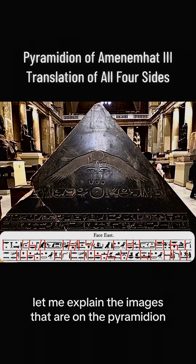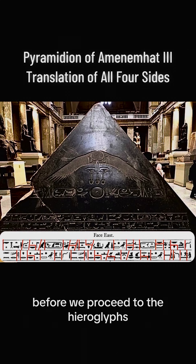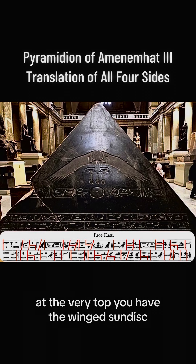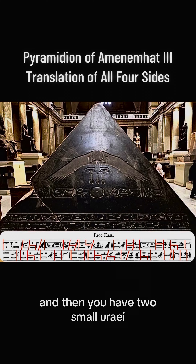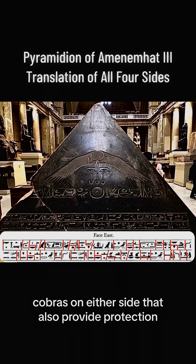Let me explain the images that are on the Pyramidion before we proceed to the hieroglyphs. At the very top, you have the Winged Sun Disc — the sun in the center with wings outstretched in protection, and then two small Urii Cobras on either side that also provide protection.